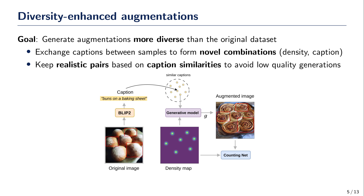However, a naive approach such as random swapping can lead to producing unrealistic combinations. For instance, the density map for a large group of cows could be associated with the caption of a pearl necklace, and this incompatibility results in poor quality generations. Our strategy consists in swapping the caption of a given training observation with captions from other training samples that are more similar than some threshold. We use the cosine similarity between caption features computed using the BLIP2 text encoder.